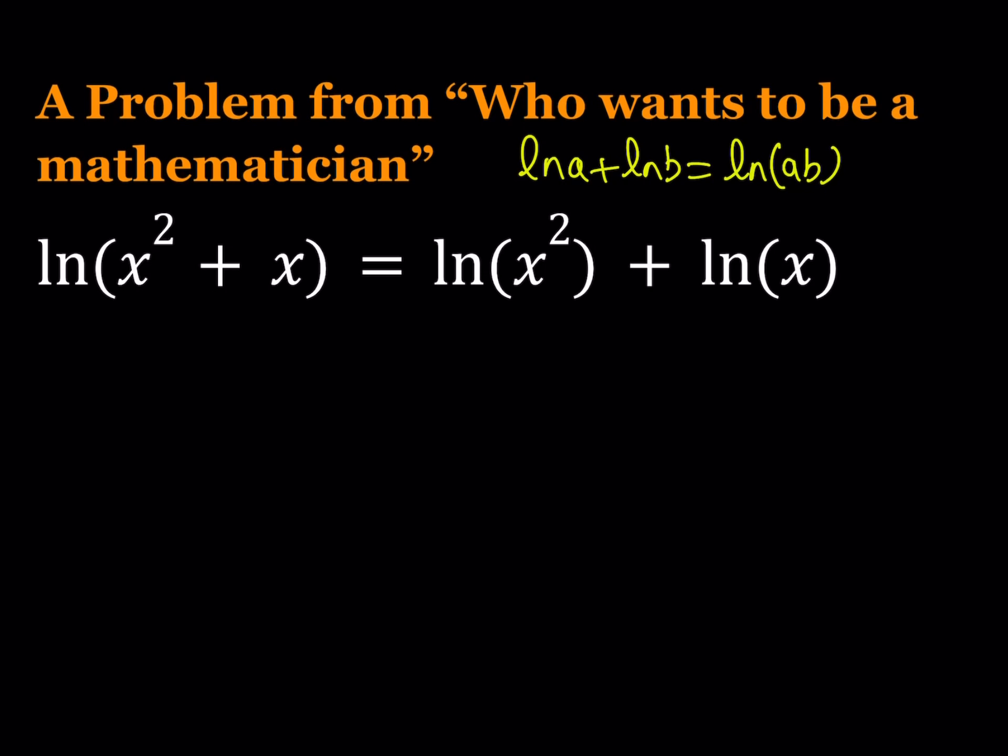You know, a needs to be positive, b needs to be positive, so on and so forth. Okay, so the right hand side can be condensed. And I can write it as ln of x squared times x. Okay.